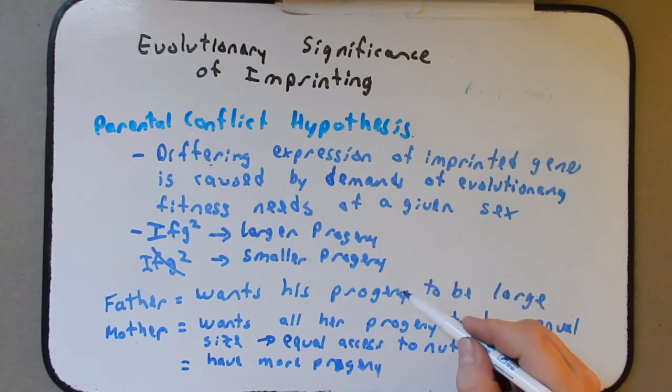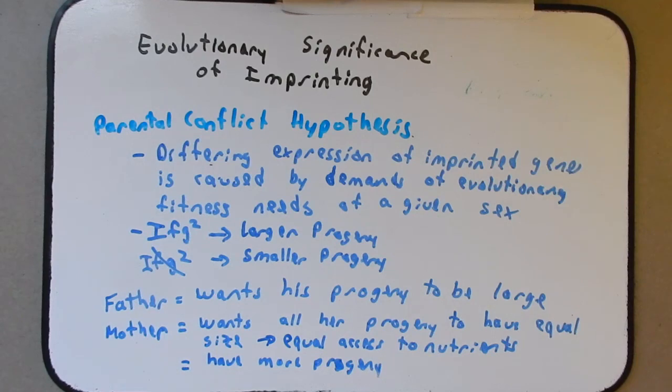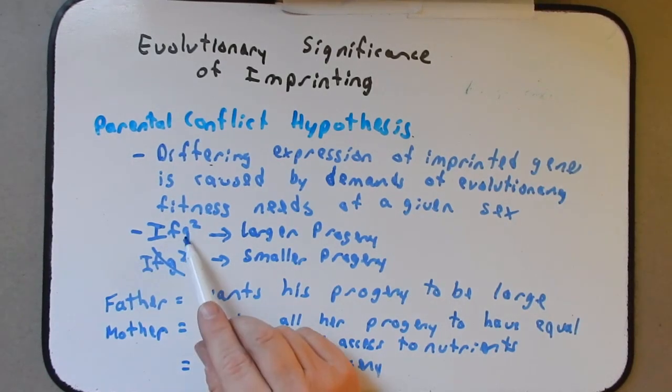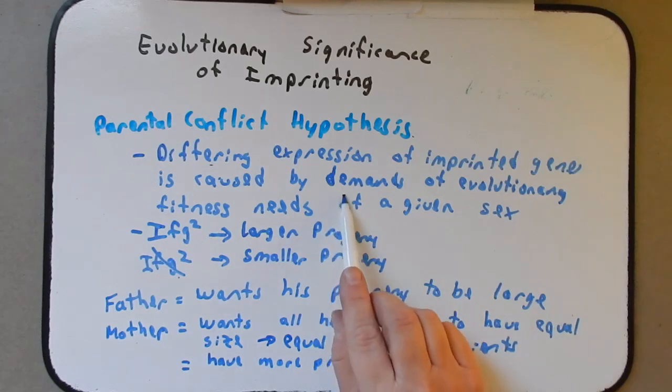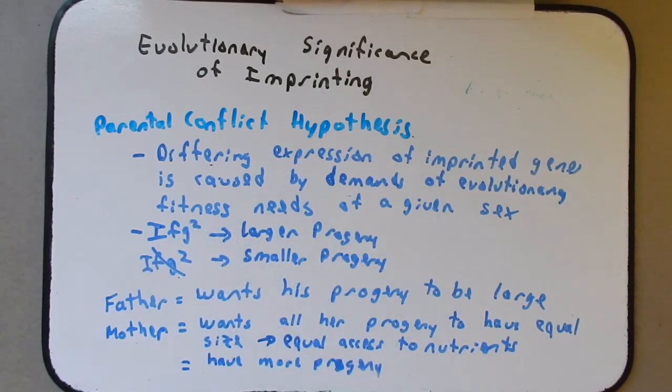And so, what happens with imprinting, it's sort of like this genetic compromise. Dad wants a big baby. Mom wants to have average-sized babies. And so, by combining, by only letting one be expressed, you end up with progeny that are equal size, but big enough to survive. Now, not all imprinted genes influence the size of the progeny. So, when we think about the parental conflict hypothesis, which we'll do later on, sometimes it's not always about the size of the organism. But it still has to, somehow, reflect the fitness demands of a given sex, so that their progeny have a stronger evolutionary significance.